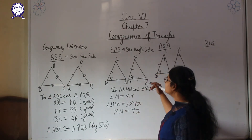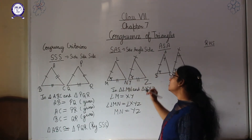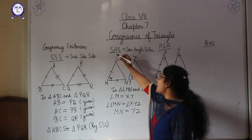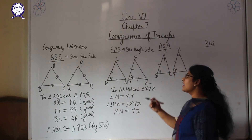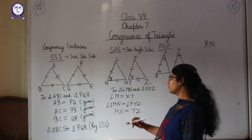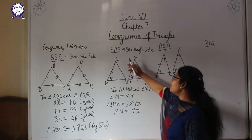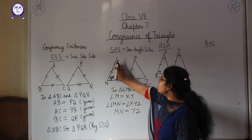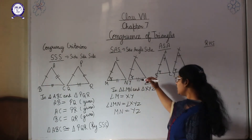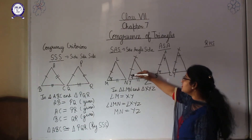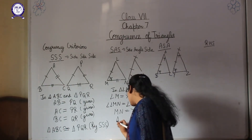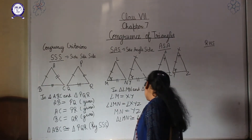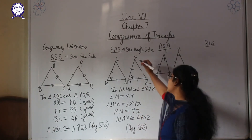By SAS criteria, these two triangles are congruent. An important point to remember: in SAS, the angle must be between the two sides being used. So if we are using sides LM and MN, the included angle at M must be used. We cannot use any other angle. Therefore, triangle LMN is congruent to triangle XYZ by SAS criteria.